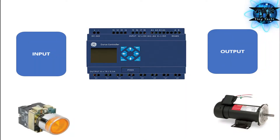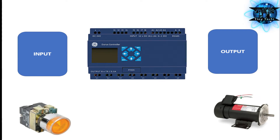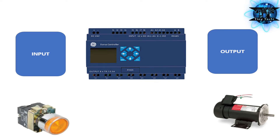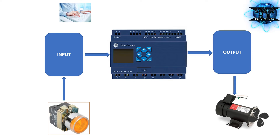Every PLC consists of three main parts: input, PLC, and output. Assume you have an electric motor and a push button. You want the motor to turn on when a button is pressed, and you want the motor to turn off when you press the button again. To do this, you must first write a program for this process on your computer and then load it into the PLC. Then connect the switch to the input and the motor to the output.